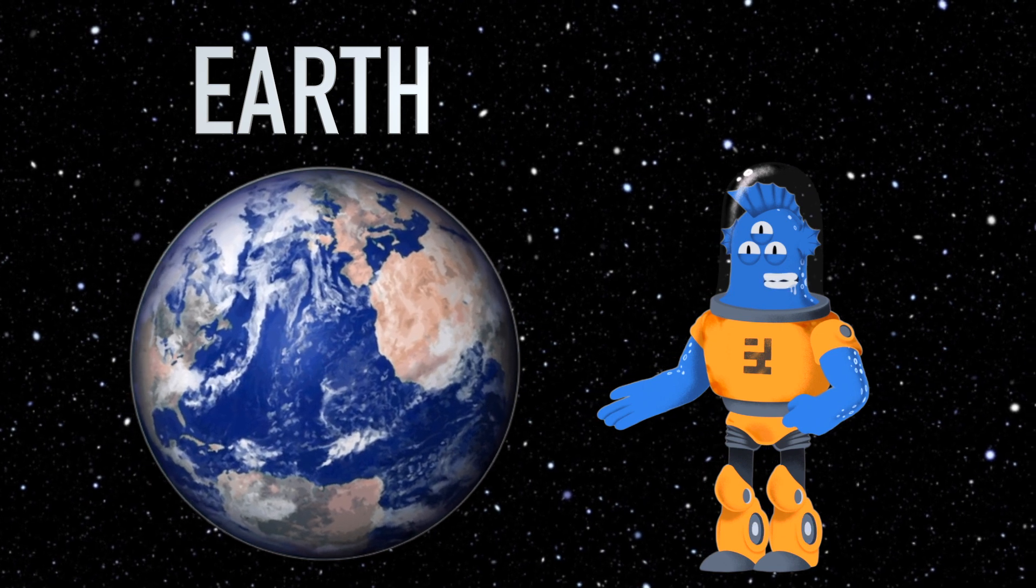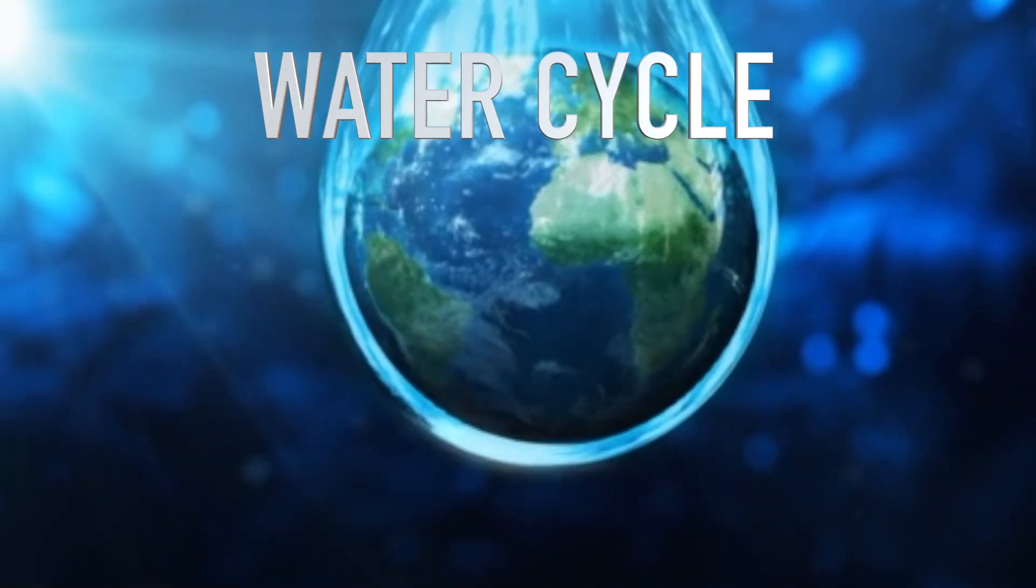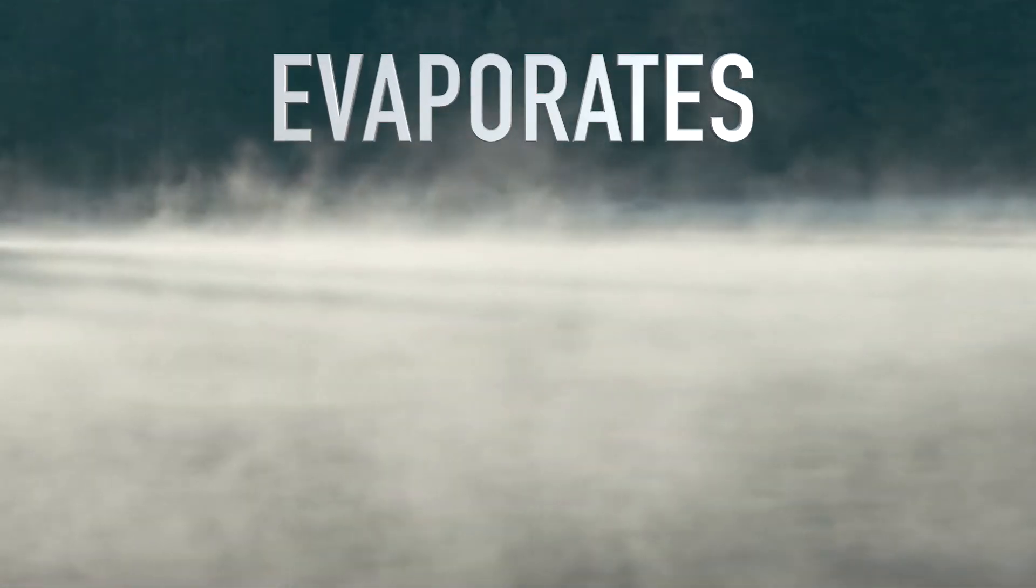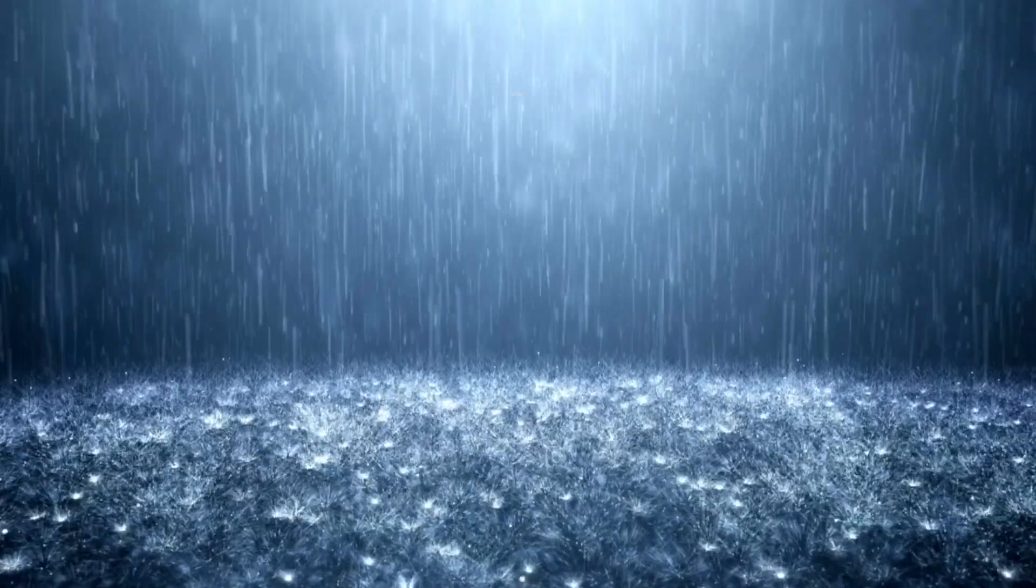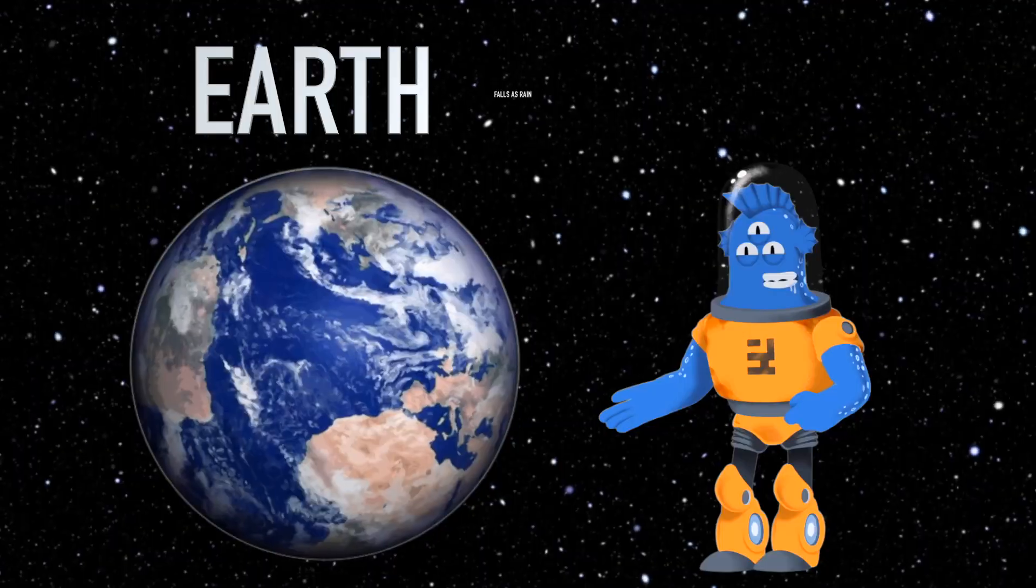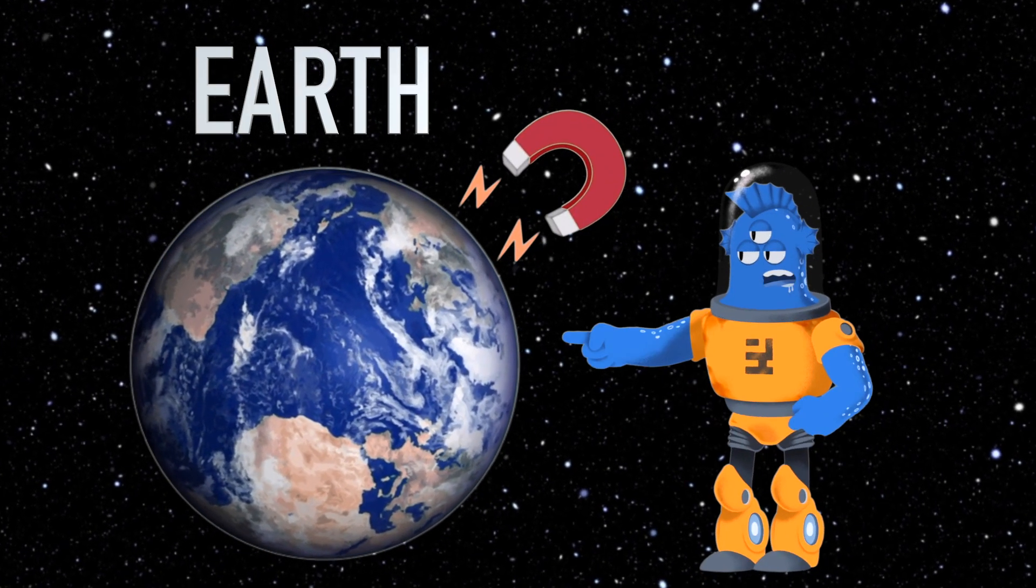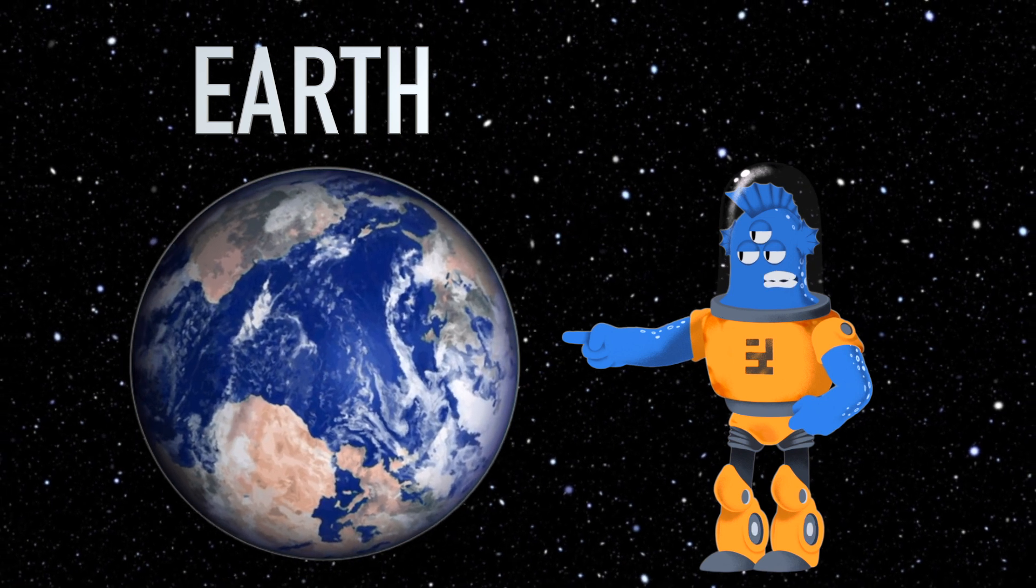Speaking of weather, Earth also has something called the water cycle. It's like a giant recycling system, where water evaporates from the oceans, forms clouds and falls as rain. Did you know that Earth has a magnetic field? It's like an invisible force that protects us from harmful solar radiation by deflecting it away.